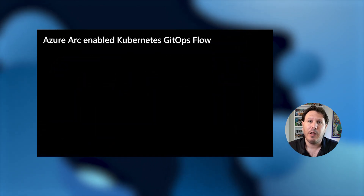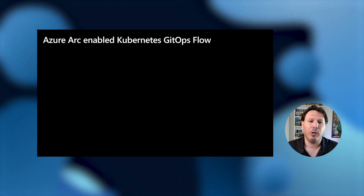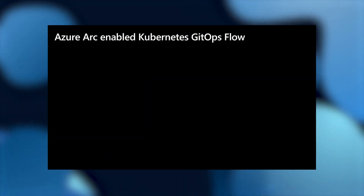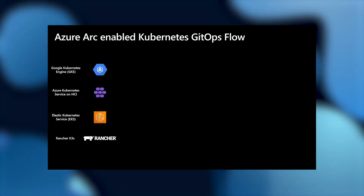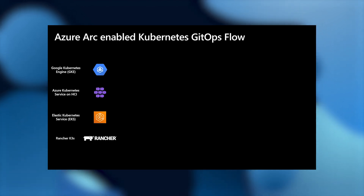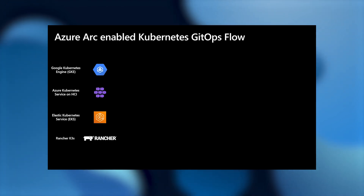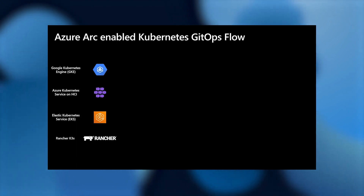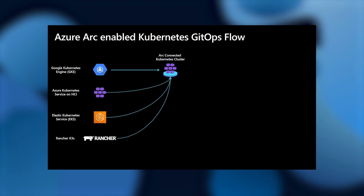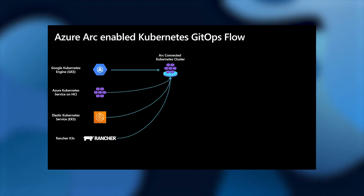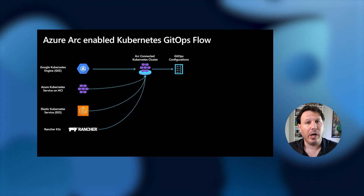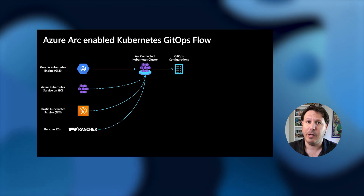Specifically today, what we're going to focus on in the demo is what you can do with Azure Arc-enabled Kubernetes and a GitOps flow. We're going to start with four clusters: a GKE cluster deployed in Google, an Azure Kubernetes Service on HCI which is our new Azure flavor of Kubernetes deployment, an Elastic Kubernetes Service EKS deployed on Amazon, and a Rancher K3S cluster deployed on top of VMware vSphere. Those clusters are already connected to Azure Arc and represented as first-class citizens inside Azure. We're going to apply GitOps configurations — one on the cluster level and another on the namespace level.